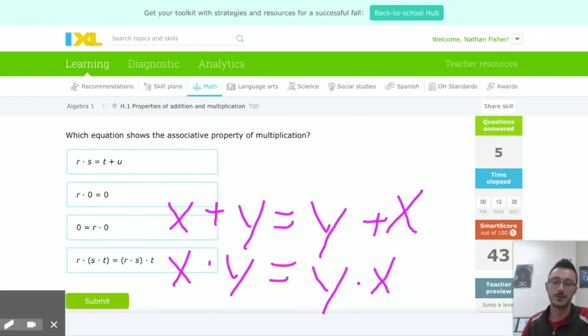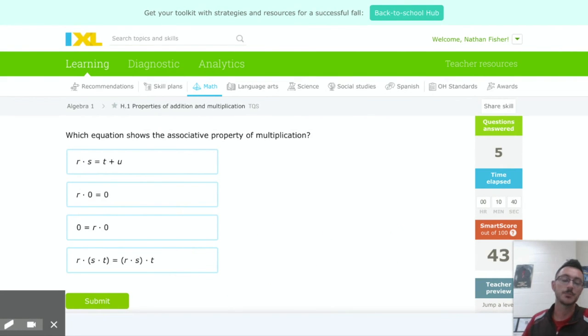I think we've talked about our four different properties now, so we'll wrap up here. Identity is whenever you get itself back as an answer, so that would either be something plus zero or something times one. Associative, like this one, is you can do the first two things and then add a third, or you can do the last two things and add the first. Doesn't matter that way.